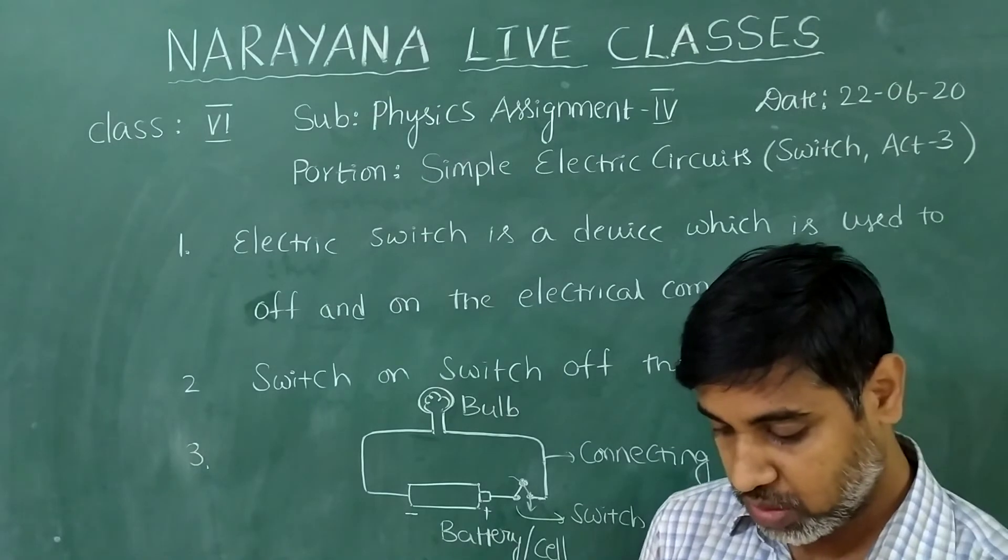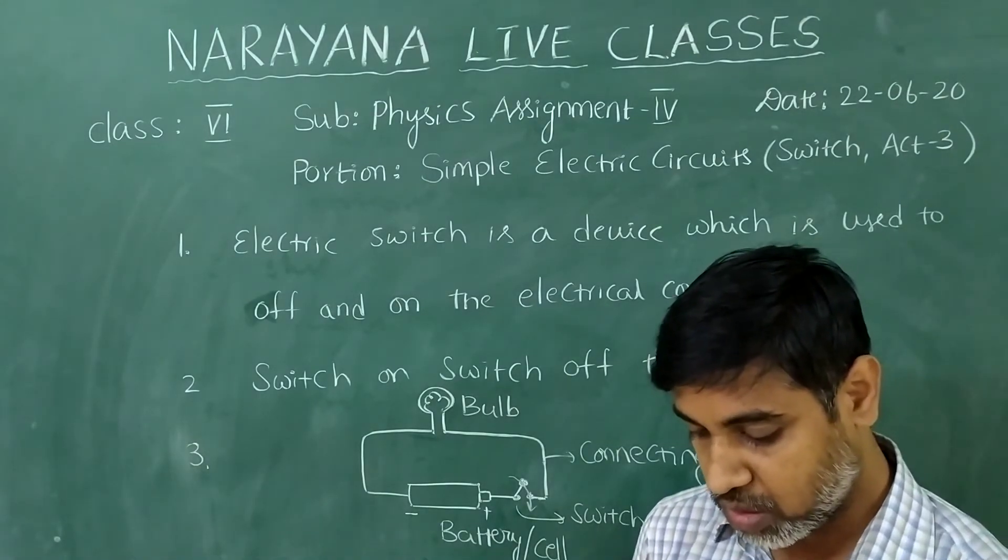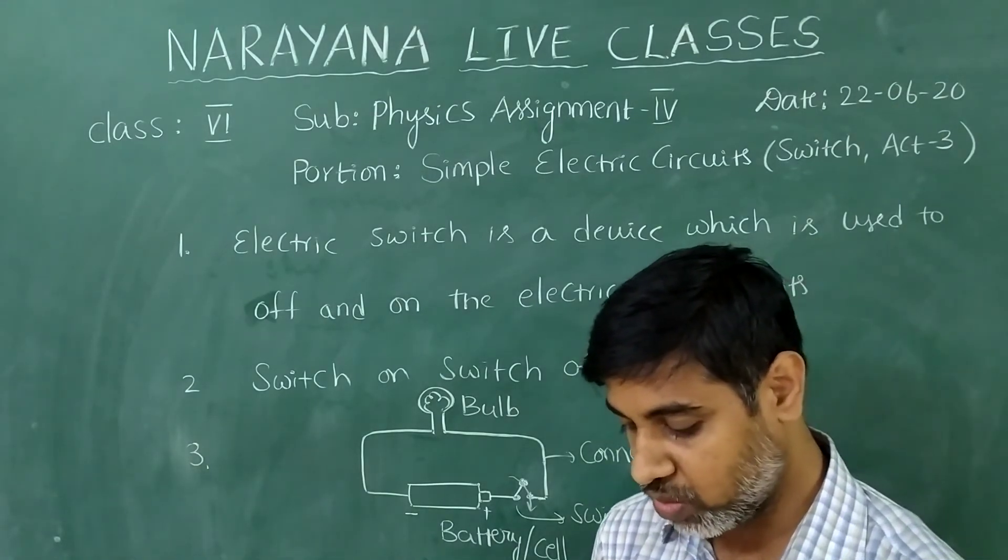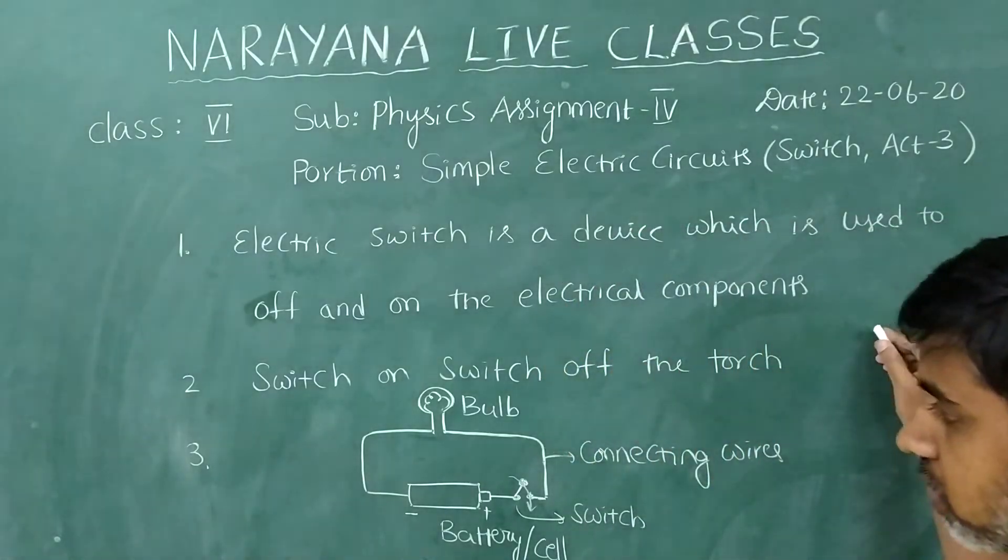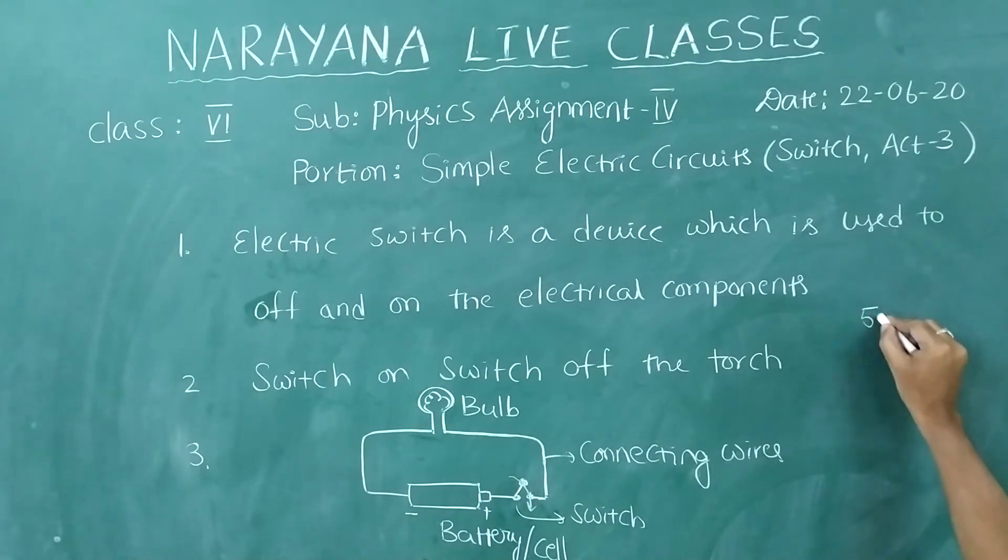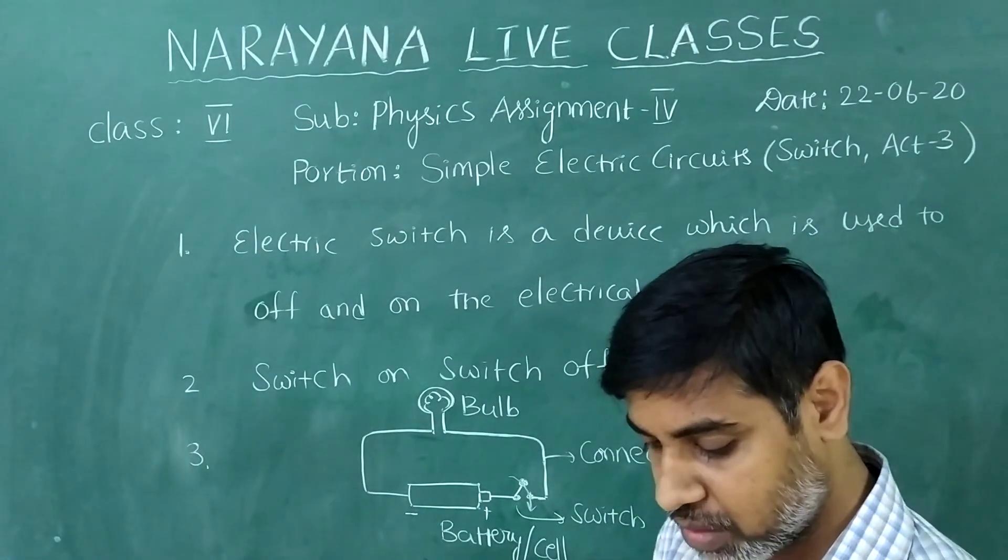The next question, half mark bits. The flow of electricity in a circuit is known as, this is a fifth question. The flow of electricity is known as electric current.